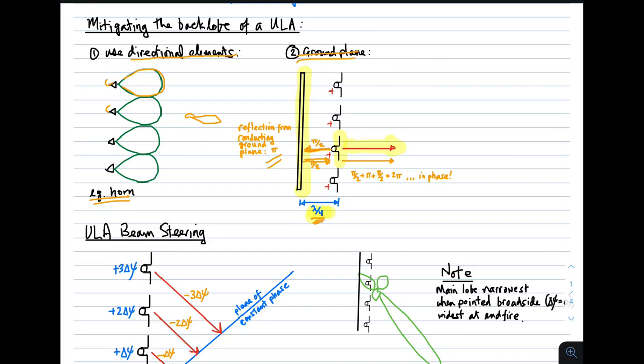So we add this up: pi over 2 in this direction, pi due to reflection, pi over 2 for the trip back. We end up with 2 pi of phase for the returning wave from the ground plane, which is in phase with the desired lobe. This results in a very small back lobe. The only way power can get around the ground plane is by diffracting around the edges, which is a very weak mechanism. This geometry is very important in large array design for getting rid of that undesired back lobe.